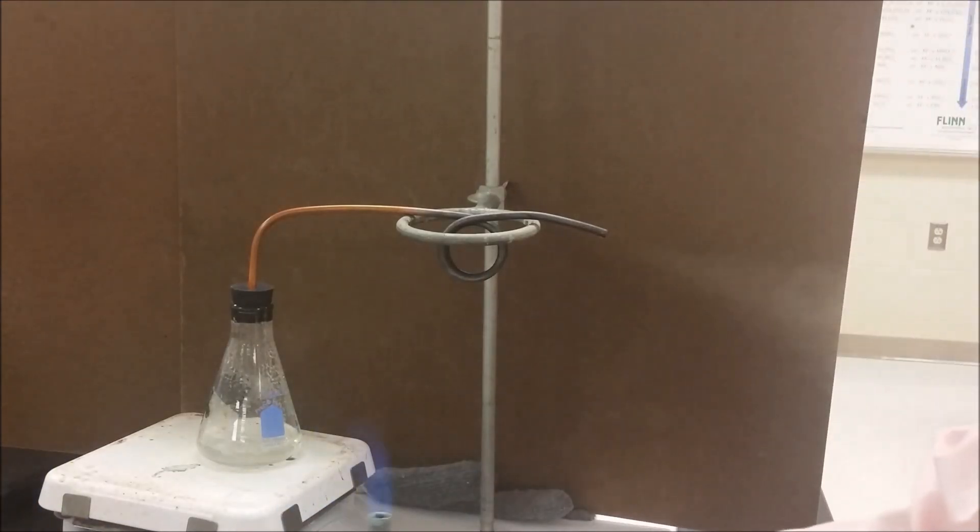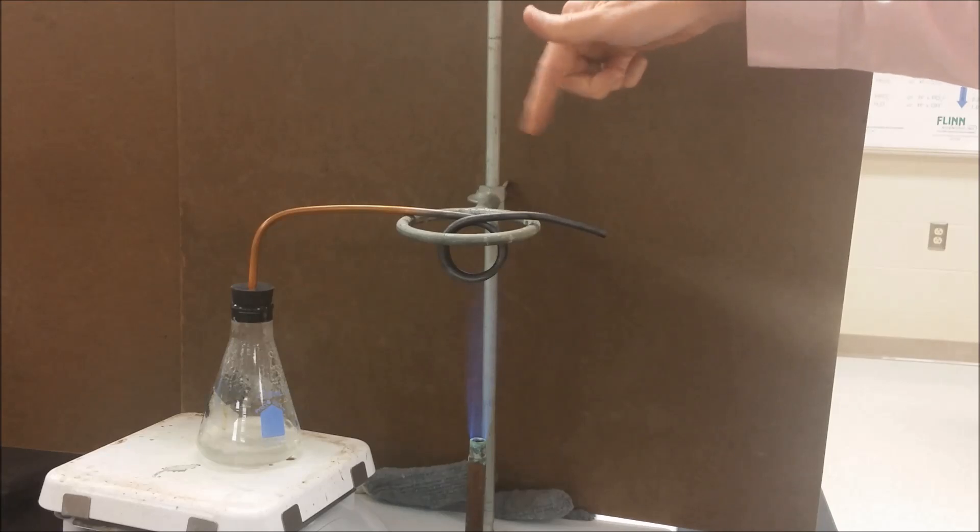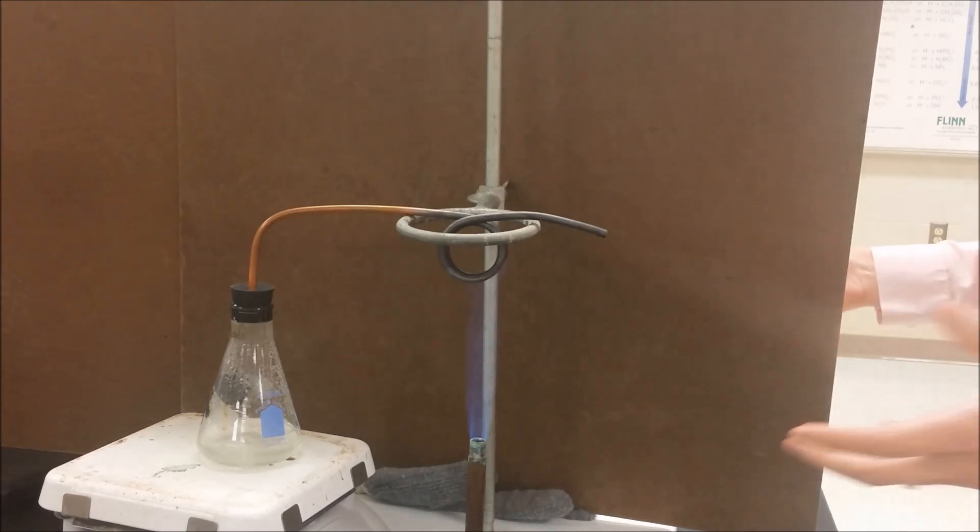We're going to add a Bunsen burner underneath this which is going to heat up the copper coil. What that's going to do is cause the steam to get so hot while it goes through this copper coil that by the time it comes out it's not going to be able to cool down into the liquid state. You're going to see this cloud-like substance disappear and it's going to be replaced by steam that's so hot that it can't actually cool down until after it's already spaced out far enough apart that it's just a gas.